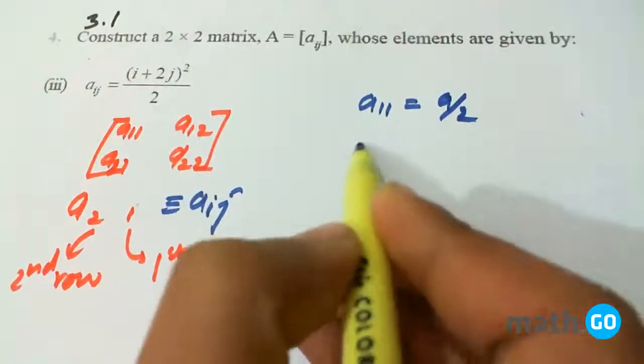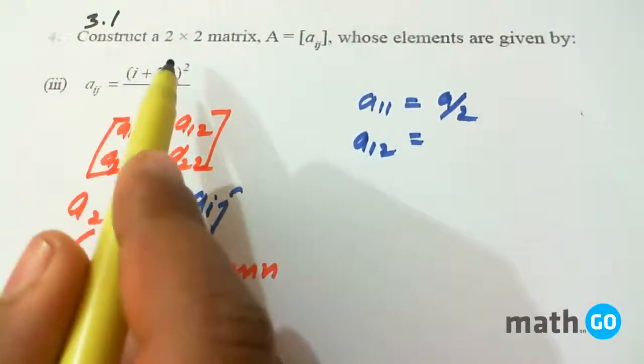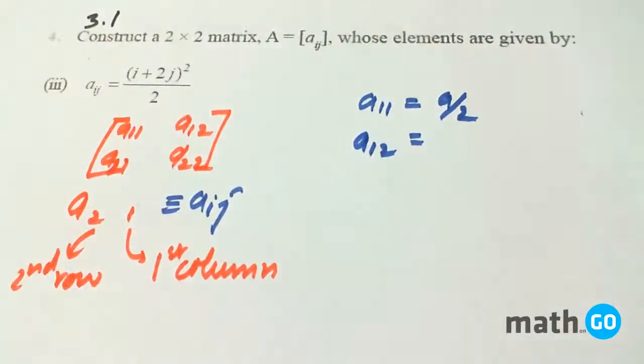A12, that is 1 plus 4, that is 5, 5 squared, 25.